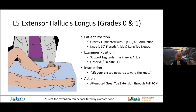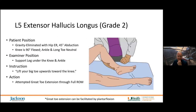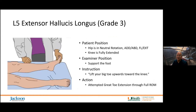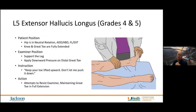L5 EHL (extensor hallucis longus): with gravity eliminated, ask them to move the big toe upward toward the knee. No movement is zero; flicker but not full range is one; full range with gravity eliminated is two. Grade 3: lift the big toe upward toward the knee against gravity. Grade 4 is against resistance but not quite age- and gender-matched; grade 5 is age- and gender-matched normal strength.